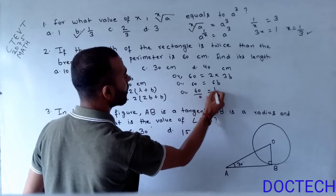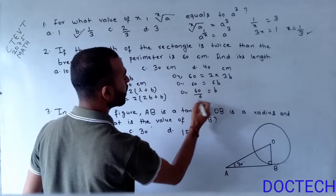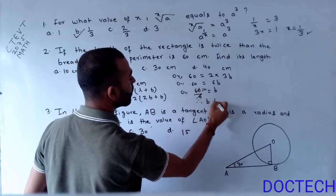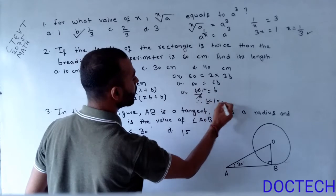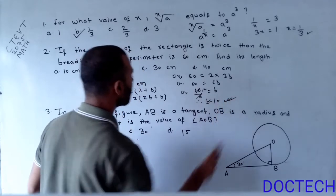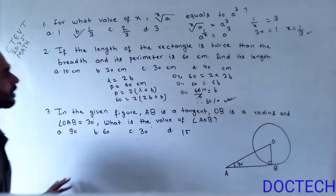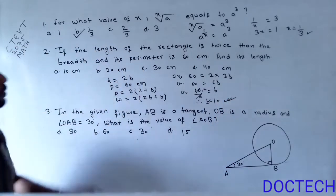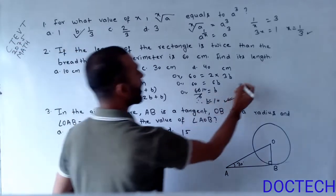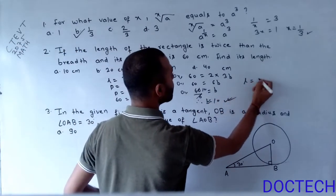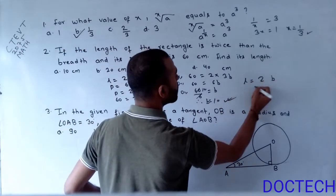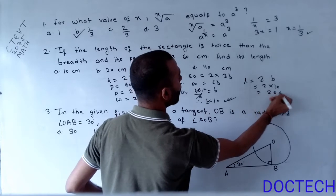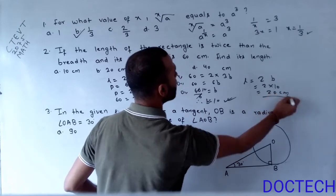60 divided by 6 equals b. Therefore, b equals 10. So, l equals 2b, which is 2 into 10.